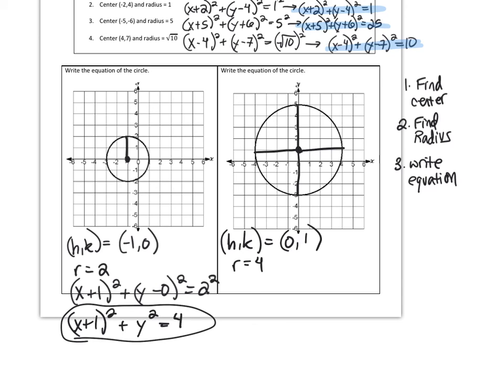So let's write our equation. We're going to write x minus 0 squared plus y minus 1 squared equals 4 squared. So that'll be x squared plus y minus 1 squared equals 16.